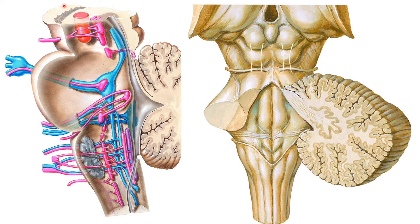The red nucleus is covered by a capsule that is an extension of the superior cerebellar peduncles. In the second picture we can see the superior cerebellar peduncles, and from them the capsule extends upwards and covers the red nucleus.